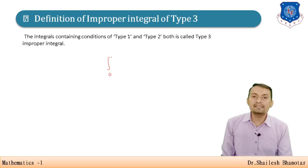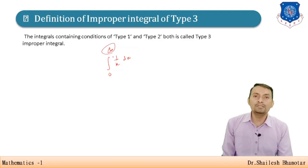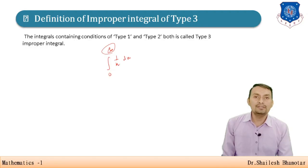For example, consider the integration from 0 to infinity of 1/x dx. When we see the infinite limit, it is an improper integral of type 1, but when x equals 0, 1/0 is unbounded or discontinuous at x = 0, so it is also an improper integral of type 2. The combination of type 1 and type 2 makes it type 3.